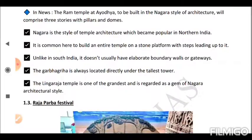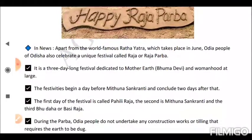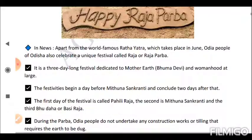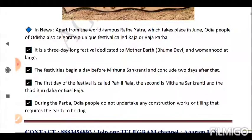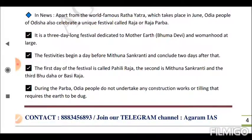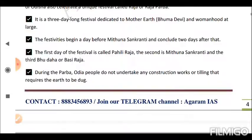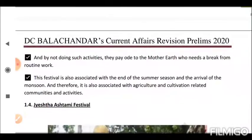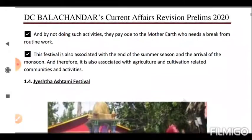Next is the Raja Parba festival. Apart from the world-famous Rath Yatra which takes place in June, the Odia people of Odisha also celebrate a unique festival called Raja or Raja Parba. It is a three-day-long festival dedicated to Mother Earth (Bhuma Devi) and womanhood at large. The festivities begin a day before Mithuna Sankranti and conclude two days after. The first day is called Pahili Raja, the second is Mithuna Sankranti, and the third is Basi Raja. During the festival, Odia people do not undertake any construction or tilling that requires the earth to be dug, paying tribute to Mother Earth.